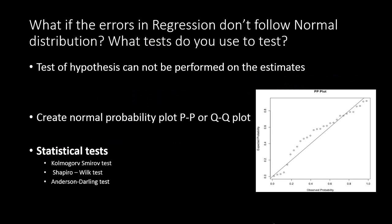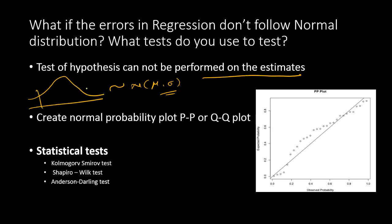What if the errors in regression do not follow a normal distribution, and what test do we use to test for normality? The test of hypothesis cannot be performed on the estimates if you face non-normal error terms. There is no issue with estimation — you can still come up with your OLS estimates — but you cannot perform tests of hypothesis, because hypothesis testing is related to the assumption that the data is normally distributed. Without normality, you cannot use 5% or 1% significance intervals to test your parameters with p-values and t-values.